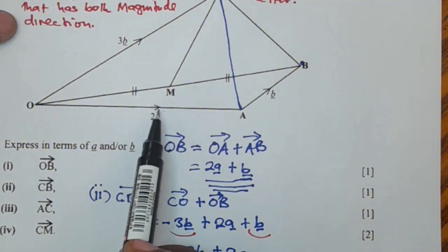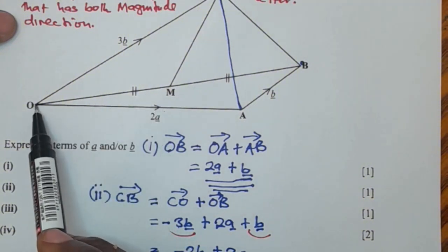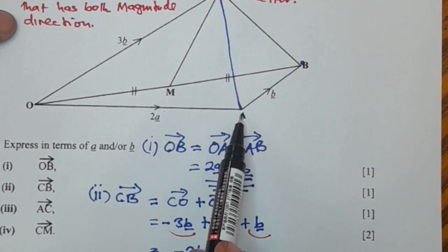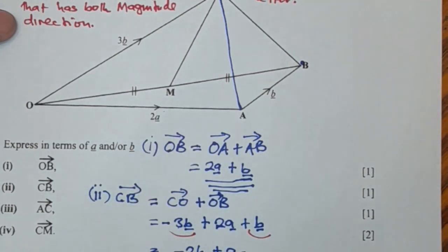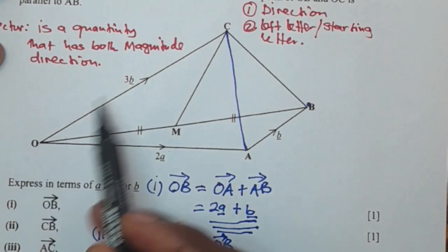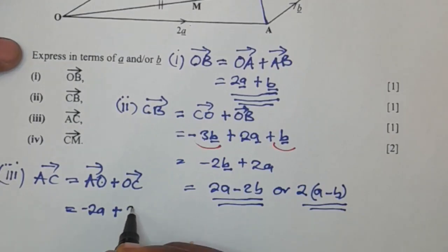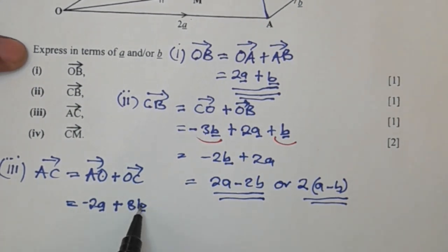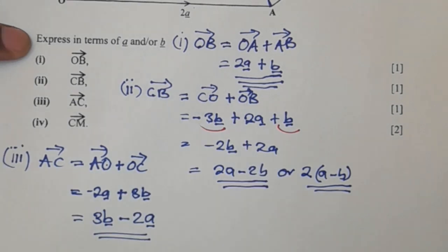You need to pay attention to the direction. The direction of this vector OA is 2a when the vector is going this way. But since we are moving from A to O, this vector is going to be negative. So we're going to have negative 2a plus OC, which is 3b. So here you can leave your answer like this, but in algebra, it's very advisable to write positive terms first and end with a negative term. So you're going to have 3b minus 2a. So that's AC, vector AC.